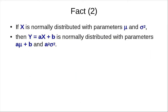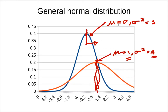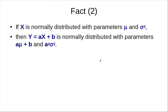Looking carefully at this picture, the two curves are pretty much the same — the difference is the offset and the scaling. So we have this fact: the two normal curves differ by an offset and a scaling factor.